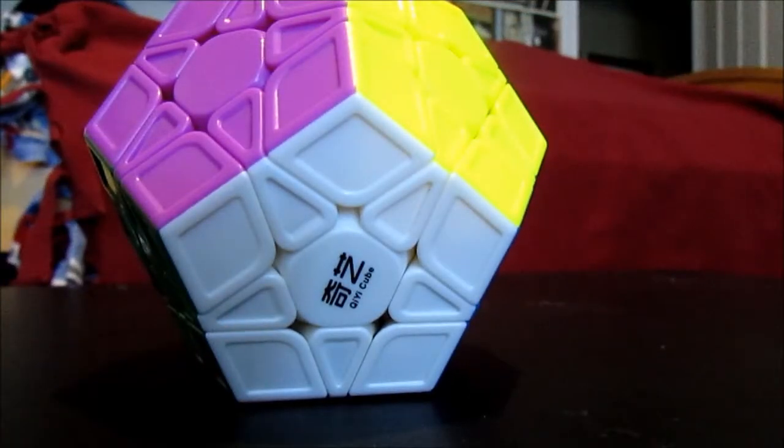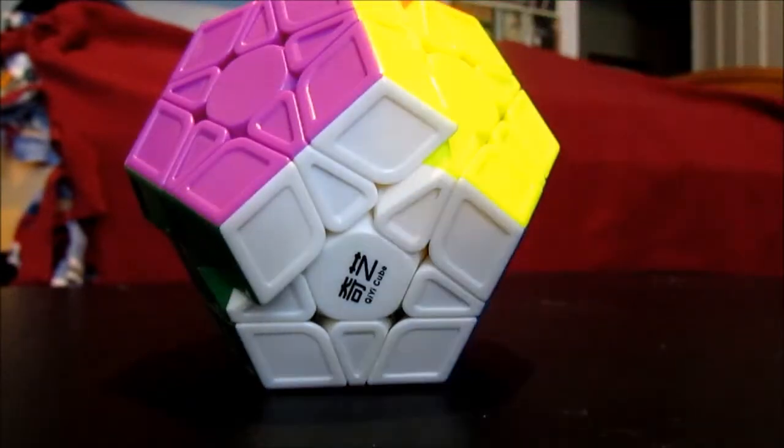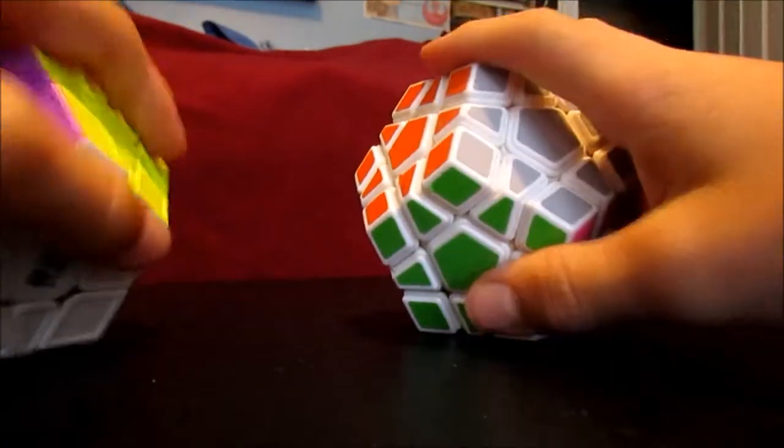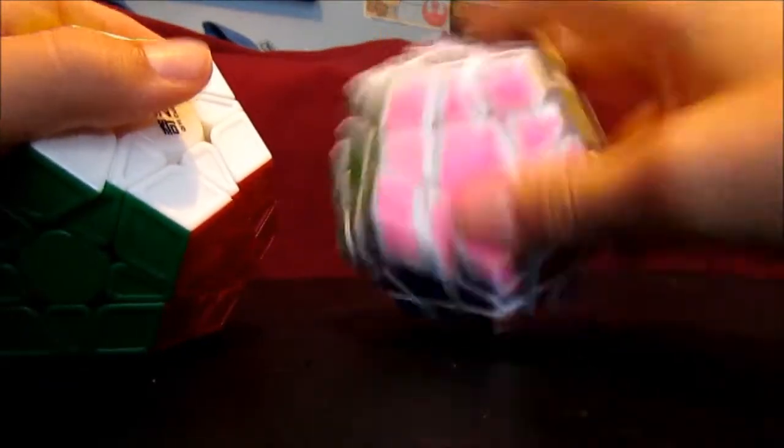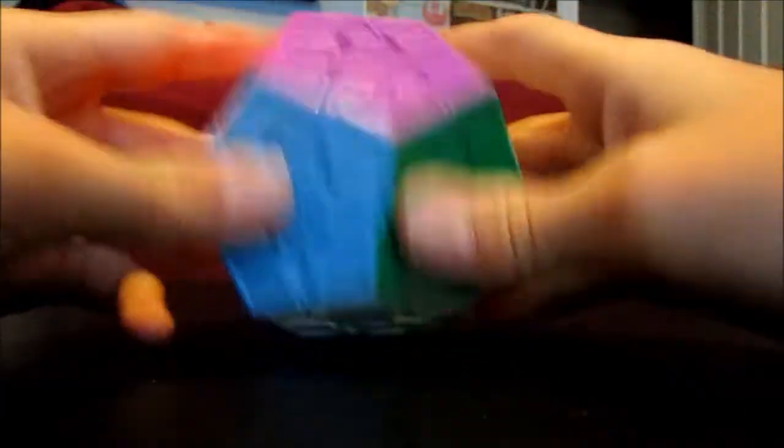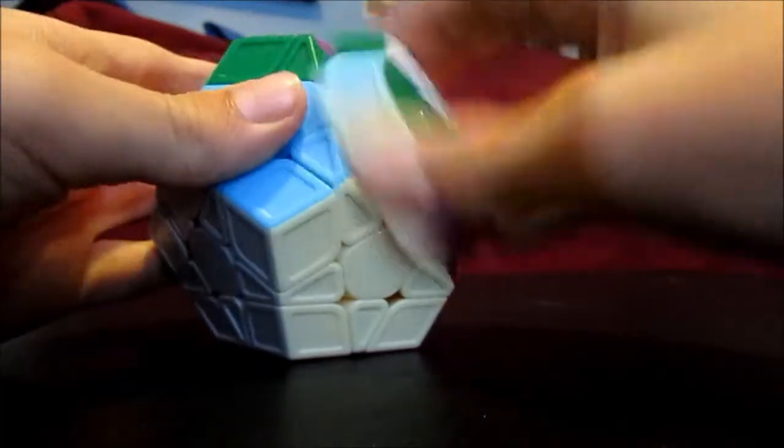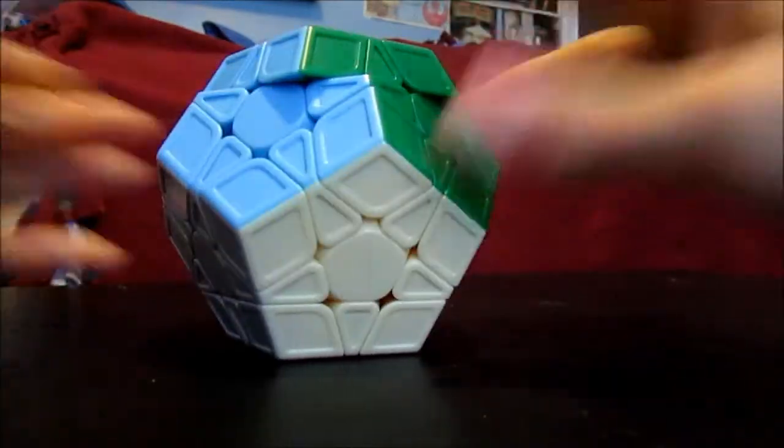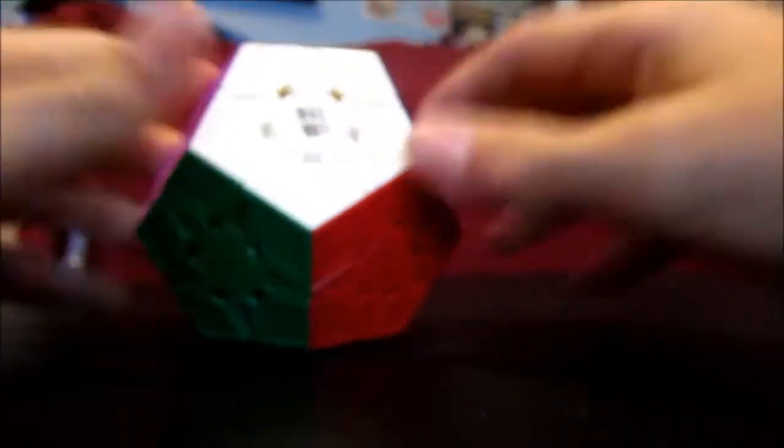But very good Megaminx, and I enjoy solving on it very much. So the solve time difference was gigantic, actually. On this one, I averaged four or five minutes, high fours, low fives. And on this one, I averaged basically any range of threes and high twos. So it's about a minute or two minutes difference. So it's a very big leap.